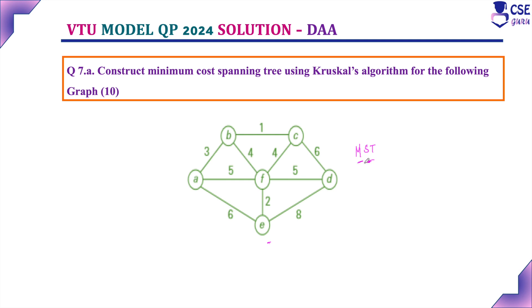This minimum spanning tree can be implemented using two algorithms: one is Kruskal's algorithm and another one is Prim's algorithm. Here we are going to implement the minimum spanning tree using Kruskal's algorithm.